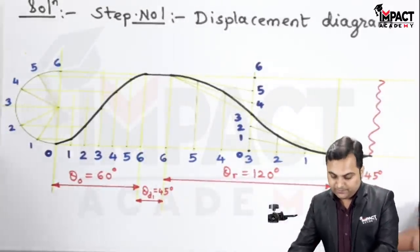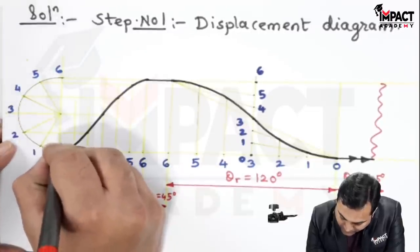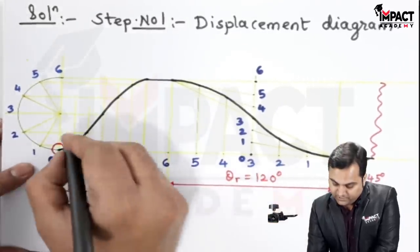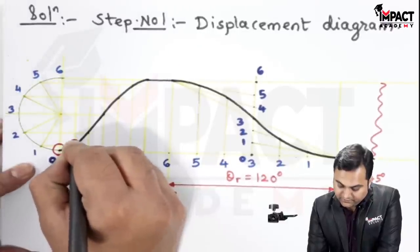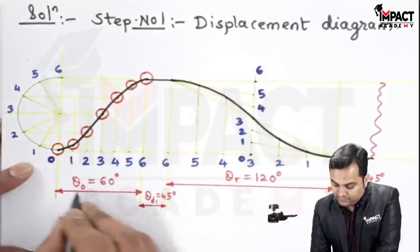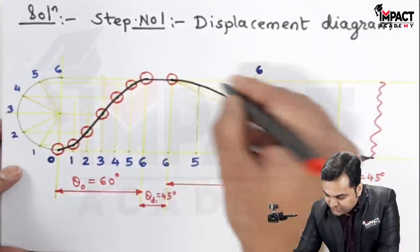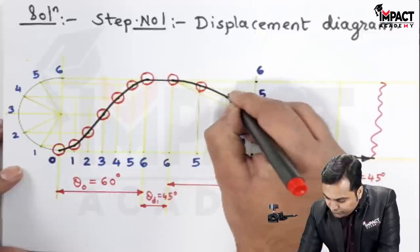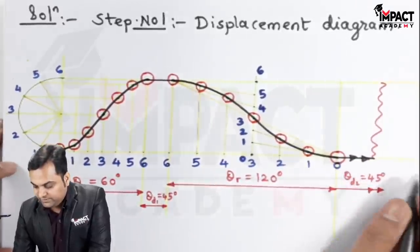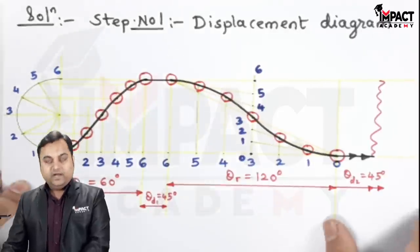Since it is a roller follower, the locations in the displacement diagram indicate the centers of the roller follower. The center shifts as the roller moves — it rises during the outstroke, reaches maximum position for 60 degrees of cam rotation, then remains at the same height for the next 45 degrees, then falls during the return stroke back to its initial position at point 0, and stays there for the remaining cycle. Step 1 — the displacement diagram — is completed. Now I will draw the cam profile, which is step 2.